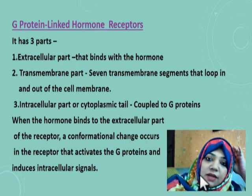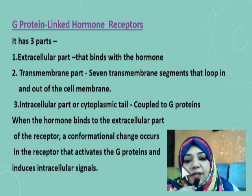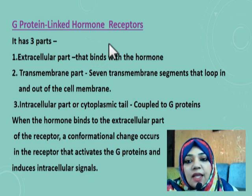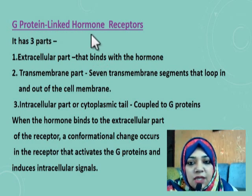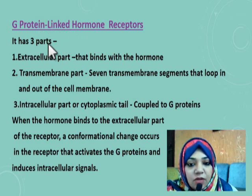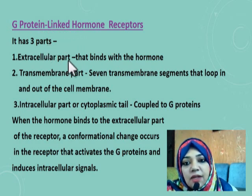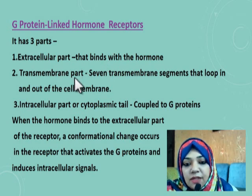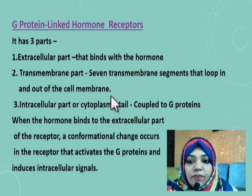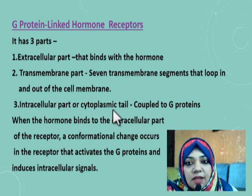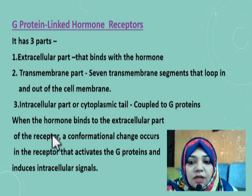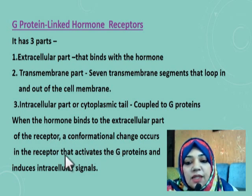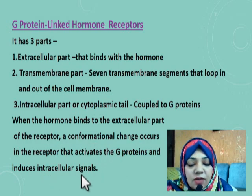Now we will see step by step how these structures play their role. The first structure is the hormone receptor, called the G protein-linked hormone receptor. It has three parts: an extracellular part that binds with the hormone, a transmembrane part that includes seven transmembrane segments looping in and out of the cell membrane, and an intracellular or cytoplasmic tail that is coupled to the G proteins. When the hormone binds with the extracellular part, a conformational change occurs, activating the G proteins and inducing intracellular signals.